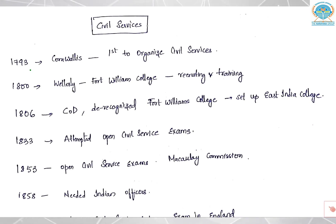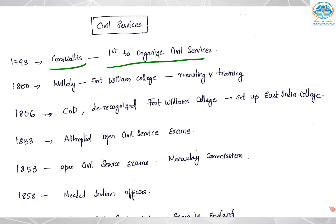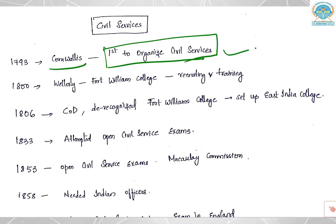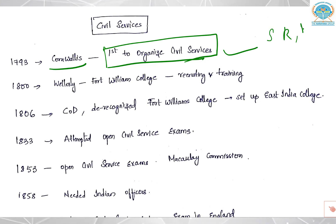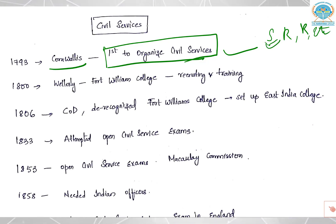First, in the year 1793, the governor was Lord Cornwallis. He was the first to organize civil services — this is very important. He tried to check corruption by bringing in some reforms in salary, rules, regulations, etc. If the officials get better salaries, they won't be very greedy about gifts and corruption.